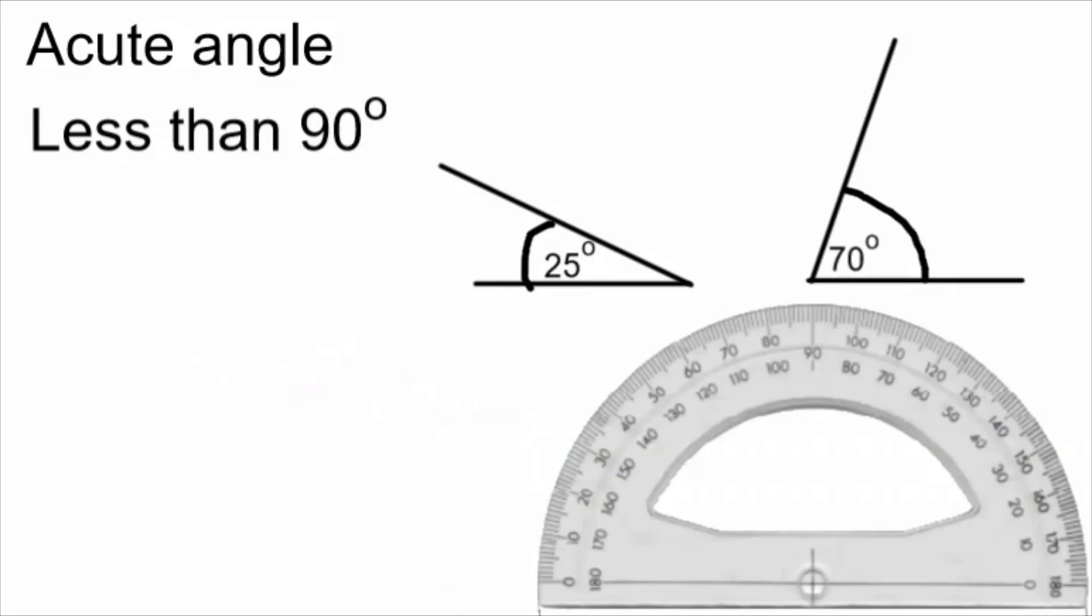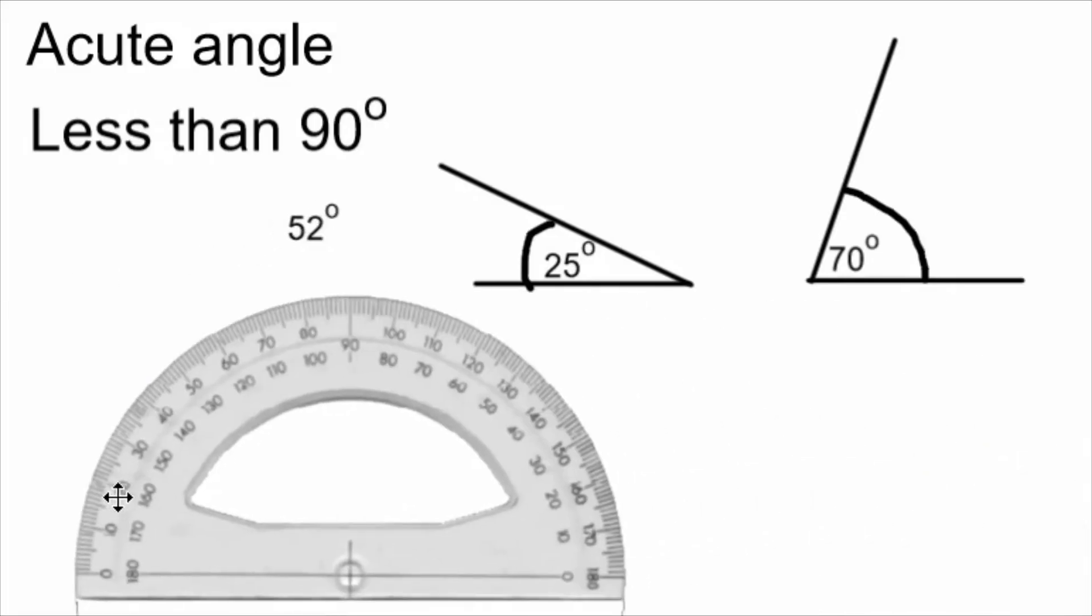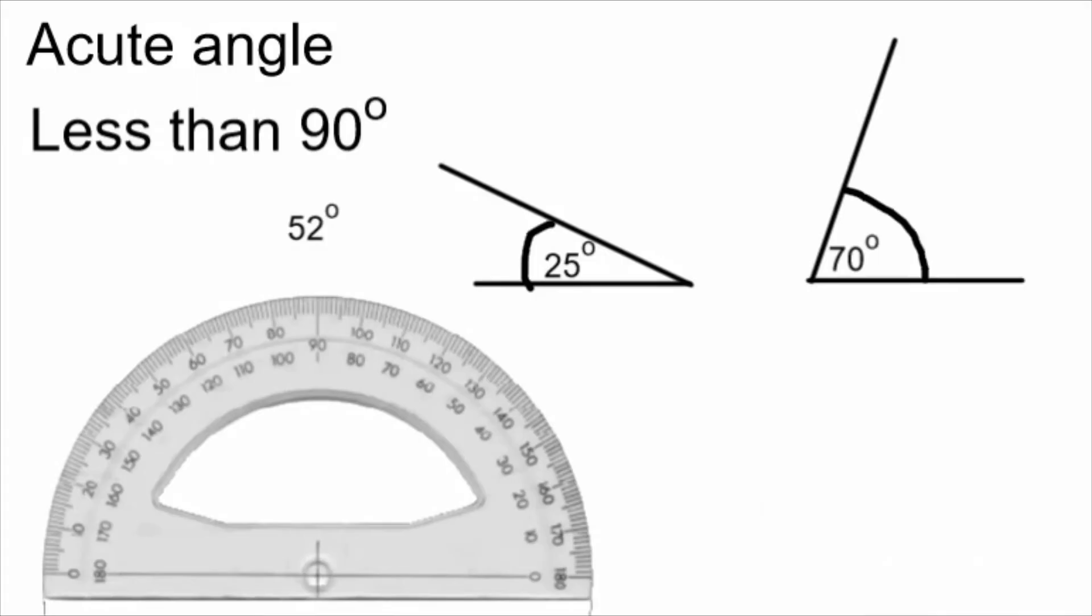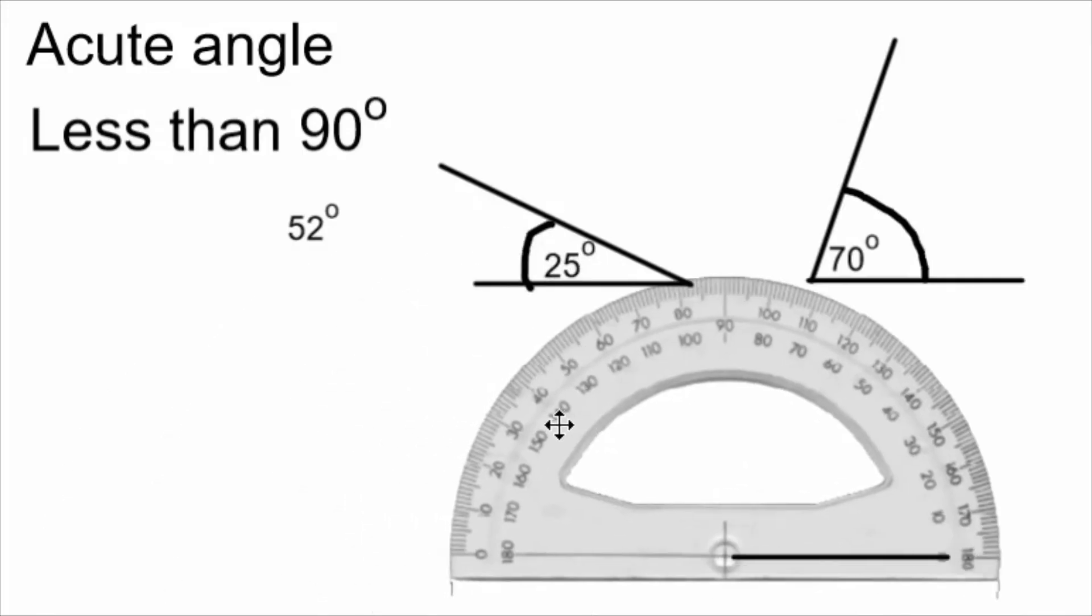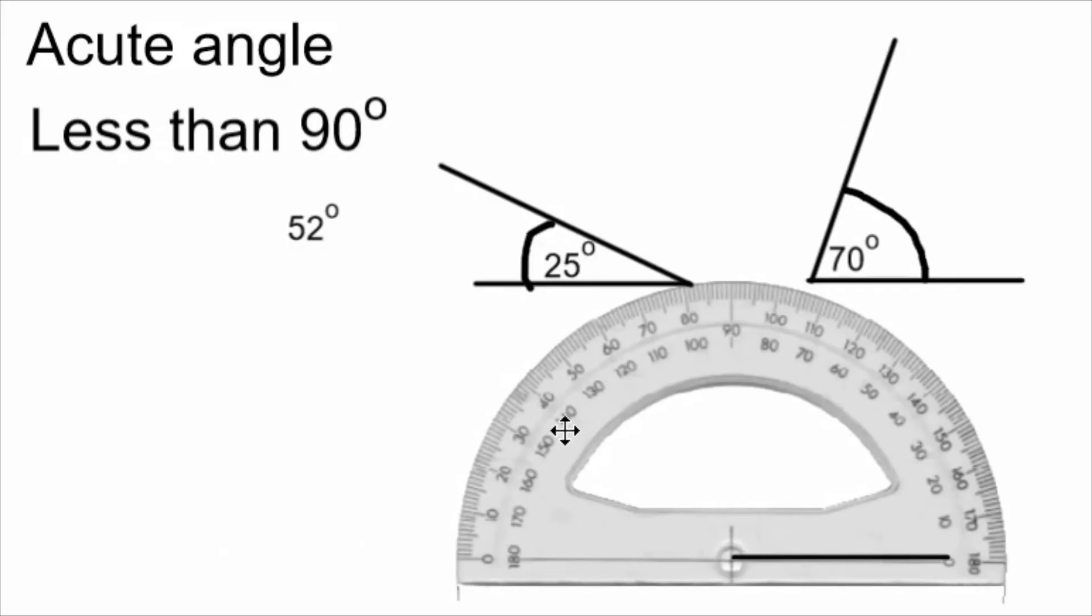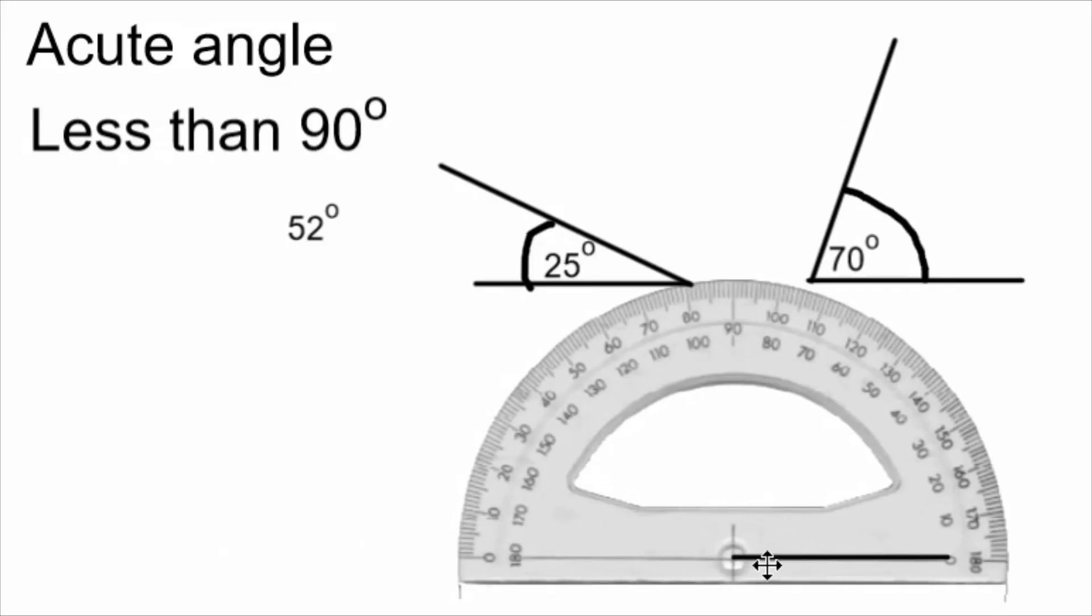This time, I think I'll draw a 52 degree angle. I'm going to put a baseline on my page, decide which end I want to draw the angle from. I think I'll draw it from this end. I put the zero dot of the protractor on that end of the line, and make sure the line is on the baseline of the protractor.